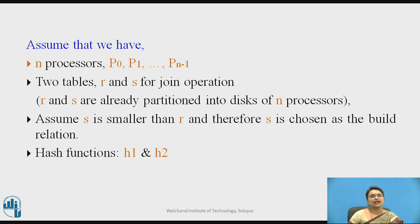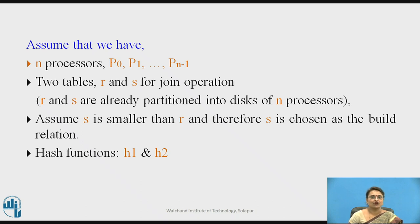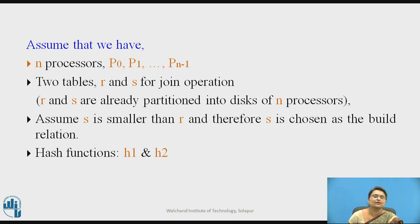We are assuming that we have n processors p0, p1, ... pn minus 1, and two relations called r and s for the join operation, considering that these are already partitioned into n processors with n disks. We assume that relation s is smaller than relation r, and therefore s is usually chosen as the build relation. This partitioning technique works on build and probe phases using two hash functions h1 and h2.